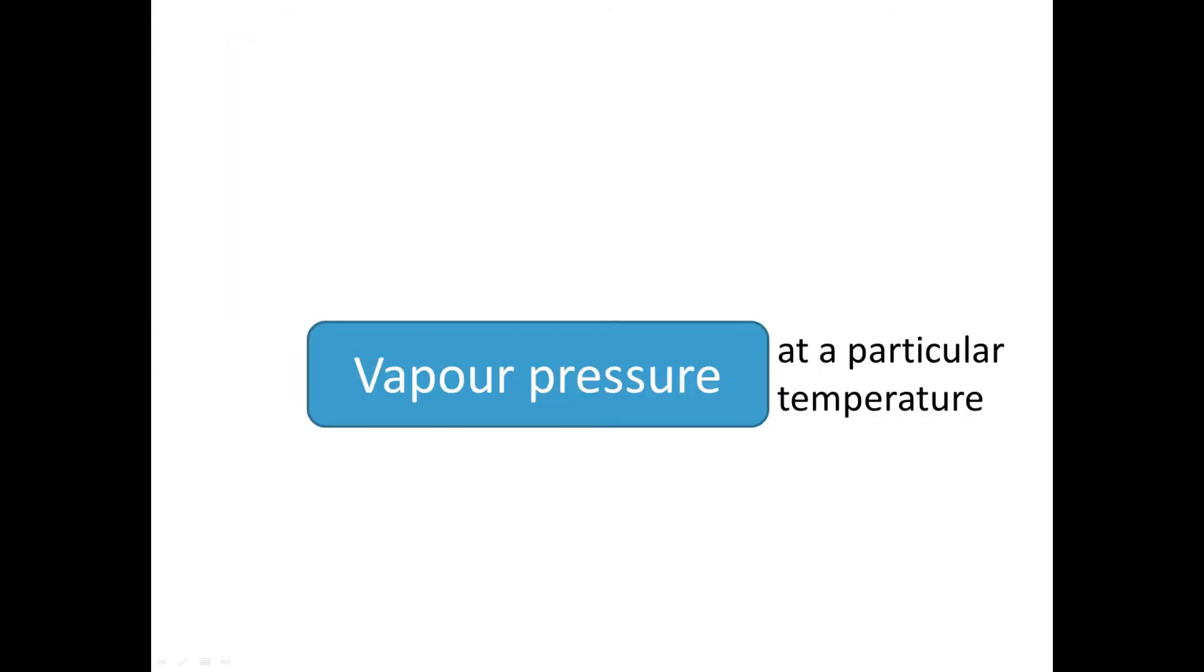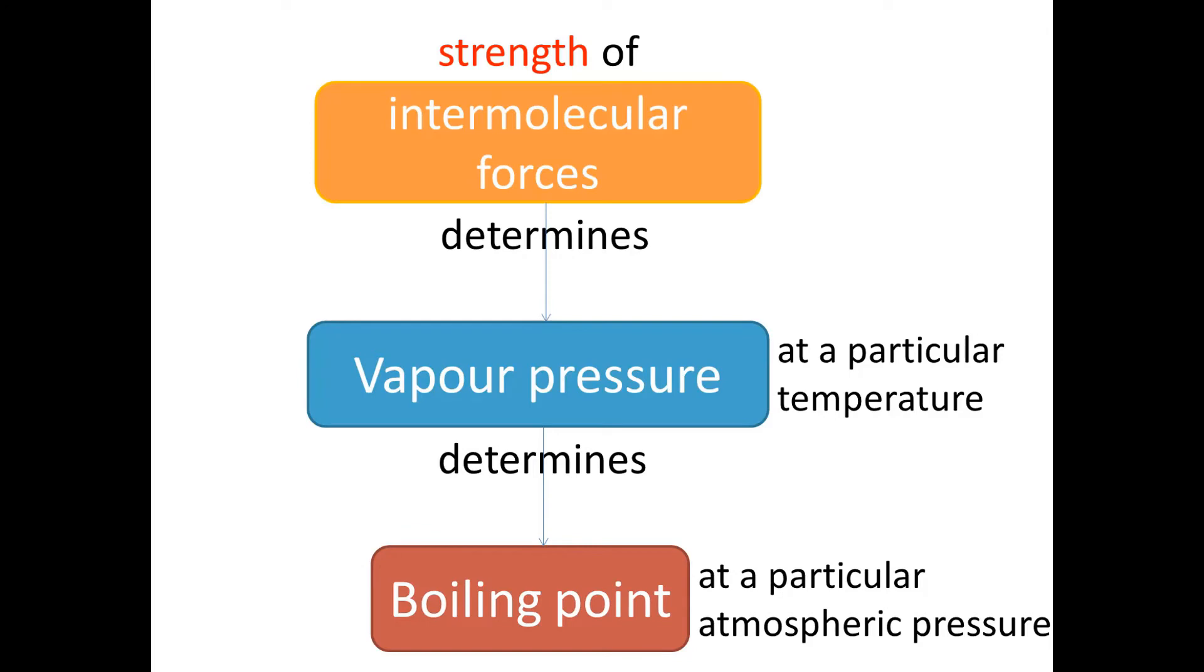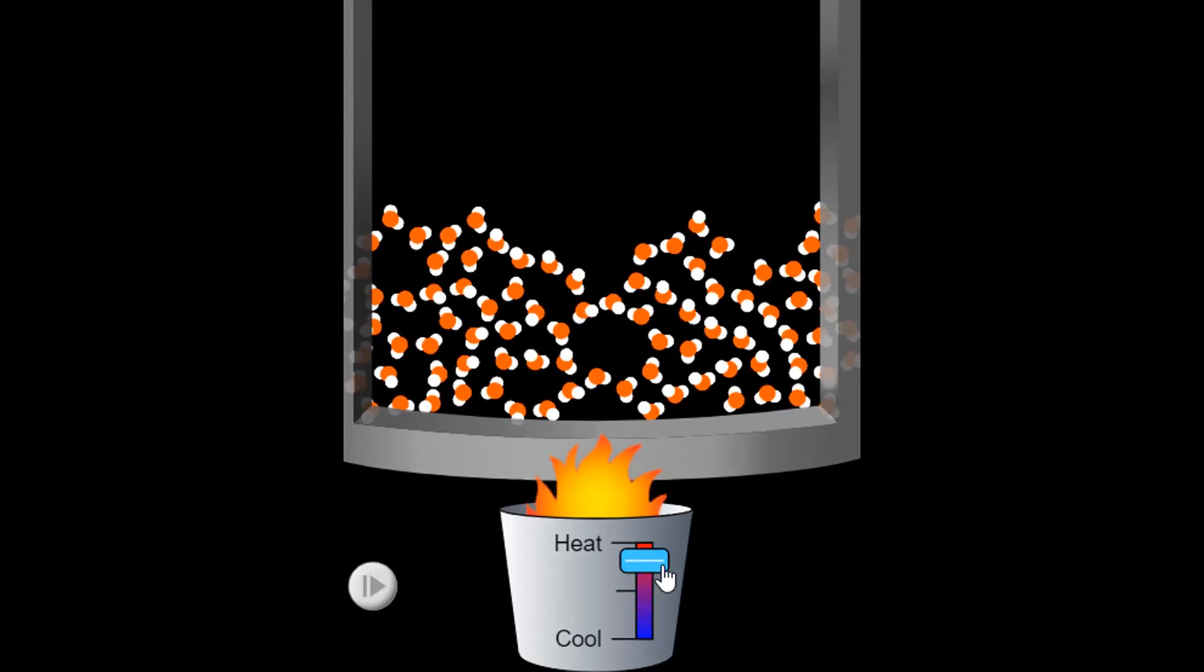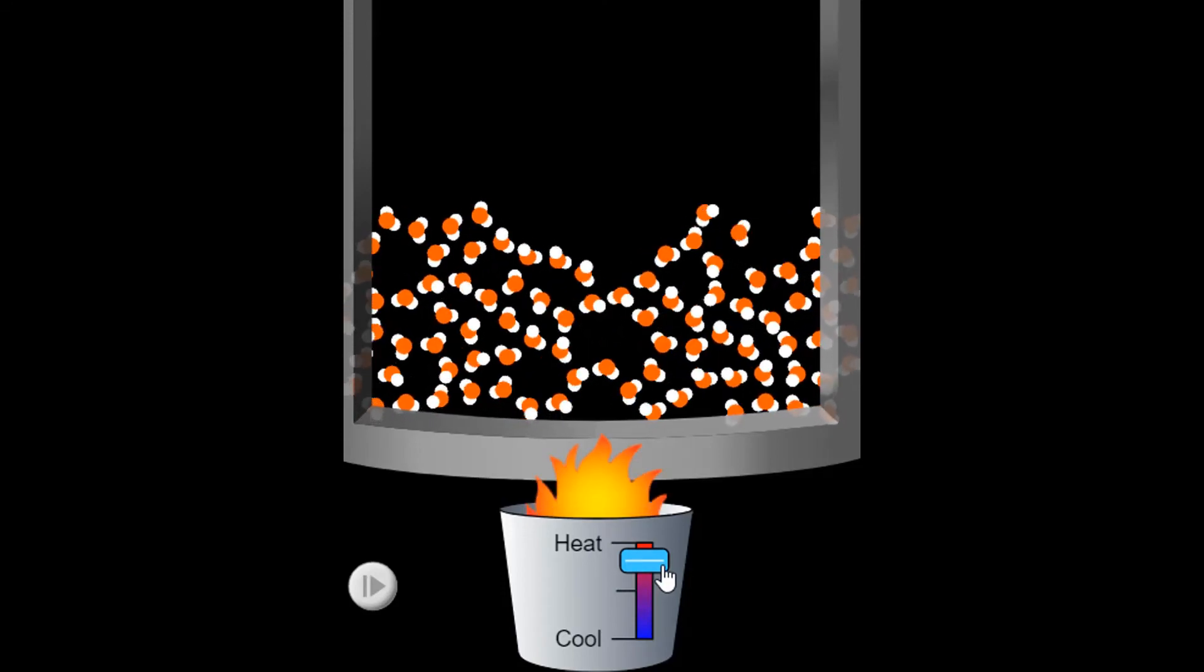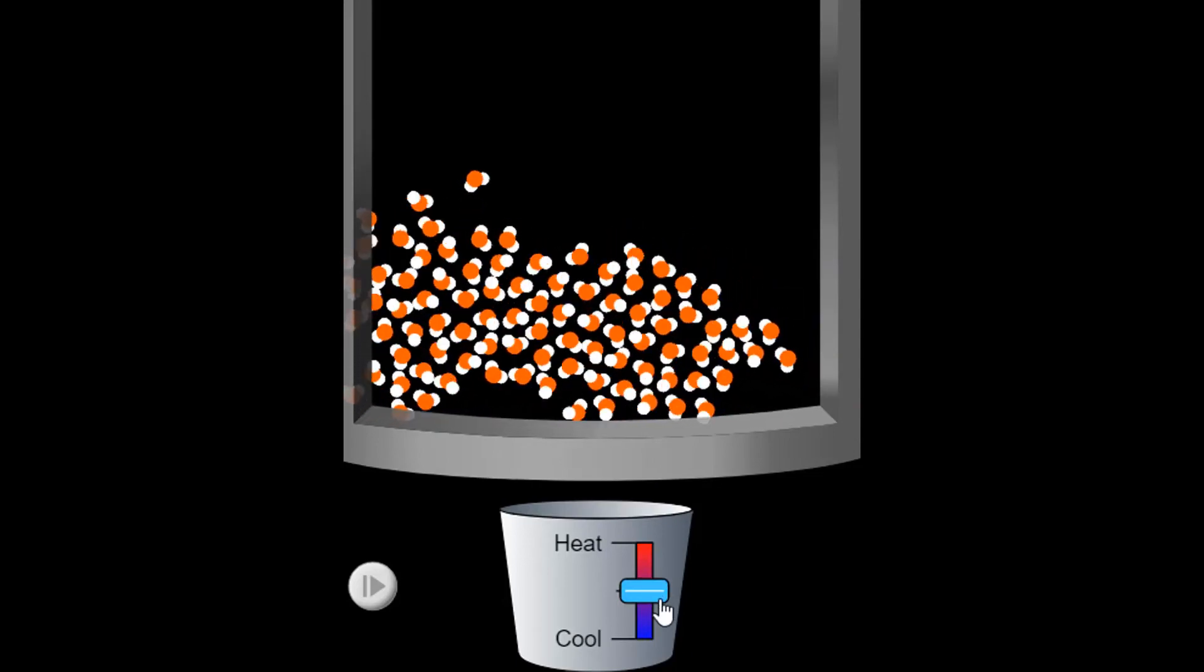The vapor pressure that a substance exerts and the temperature at which boiling occurs depends on the strength of the intermolecular bonds. So in other words, the strength of the intermolecular forces determines how much energy you have to add to the substance for those particles to have enough kinetic energy so that they will break their intermolecular forces.